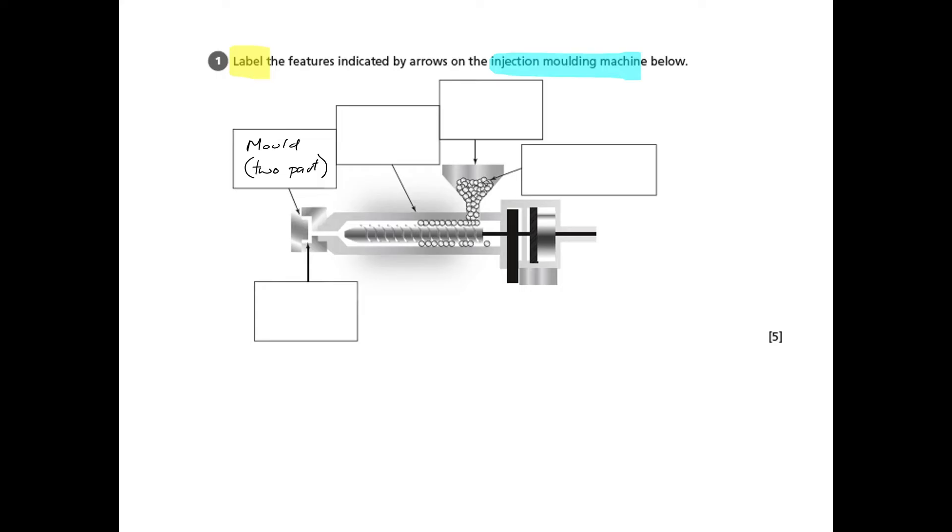The next thing is the heater. It's not particularly obvious in this diagram, but you know that the heater has to be at that section of the injection molding machine.